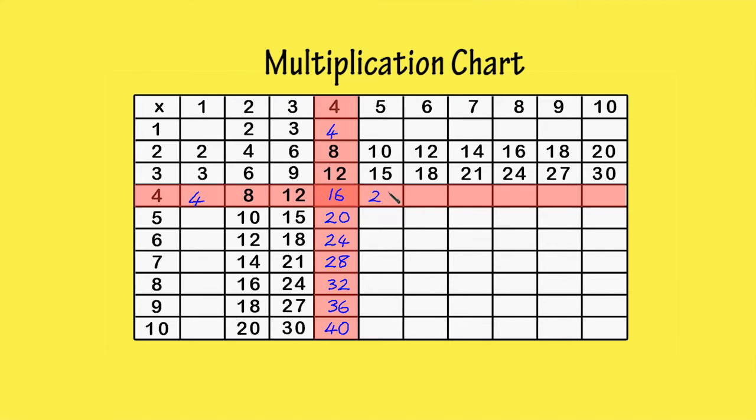5 times 4 is 20. 6 times 4 is 24. 7 times 4 is 28. 8 times 4 is 32. 9 times 4 is 36. 10 times 4 is 40.